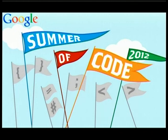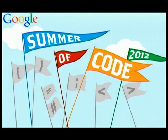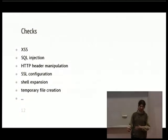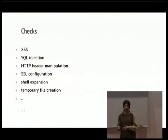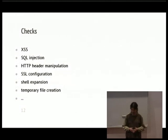The end result of the Summer of Code was that Scanny can actually scan for vulnerabilities and is approaching a usable state. So, what kind of things does it check for? Mostly the stuff from the list at the beginning: cross-site scripting, SQL injection issues, HTTP header manipulation where you can sneak in some bad values, misconfigured SSL, shell expansion — meaning you pass some user input to the shell and a clever user can run commands there — and a lot of other smaller issues.